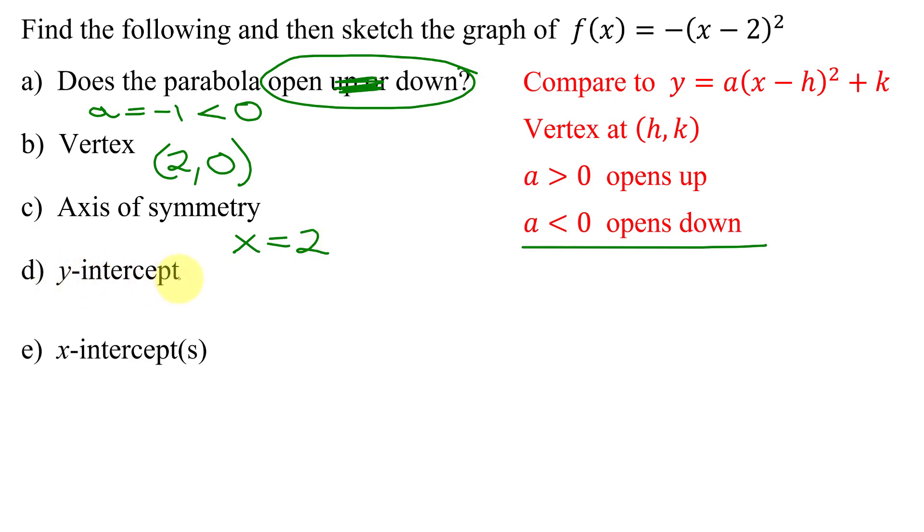To find the y-intercept, you always set x equal to 0. So I need to find f(0). So replacing this x with a 0, I get the opposite of 0 minus 2 all squared, which is the opposite of negative 2 all squared. Now you need to square first. So it's the opposite of positive 4. So that's just going to give me negative 4. So the y-intercept is at the ordered pair (0, -4).